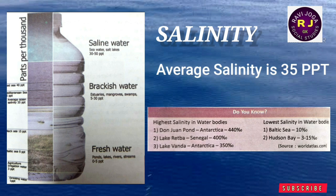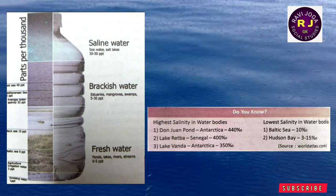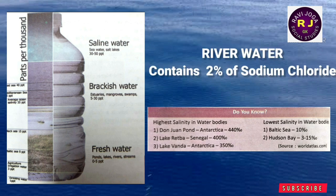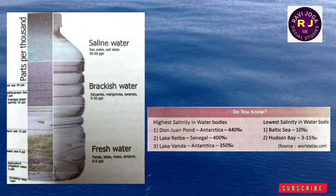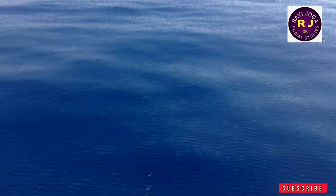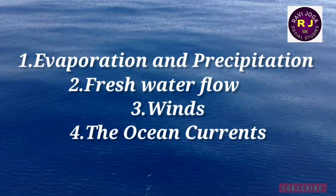River water contains only two percent of sodium chloride. We can see different water bodies and their salinity levels, and there are certain factors that affect the salinity on the surface layers of the ocean.